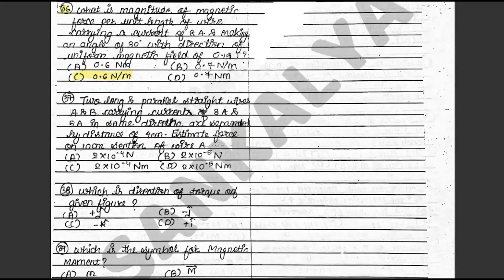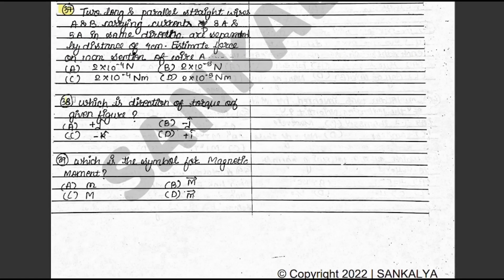Question 37: Two long and parallel straight wires A and B carry currents of 8 ampere and 5 ampere in the same direction, separated by a distance of 4 cm. Estimate the force on a 10 cm section of wire A. The answer is B: 2 × 10⁻⁵ N. This is in textbook exercise 7. Question 38: Which is the direction of torque of a given figure? The answer is B: minus J cap. This is in textbook exercise 24.